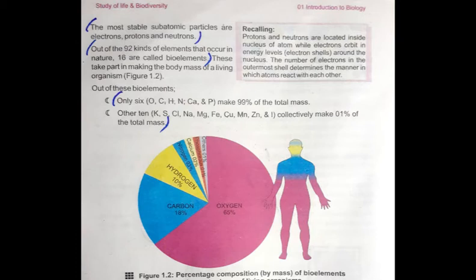Now, the total kinds of elements that naturally exist are 92. Out of these 92 elements, 16 are called bio-elements. Bio-elements are those that are present in living bodies — bio-elements are those that are present in living organisms. So in nature there are 92 total kinds of elements, and out of those, 16 are your bio-elements.